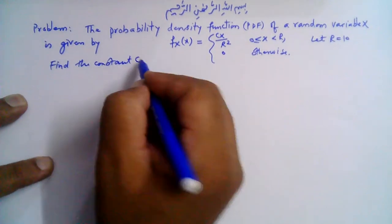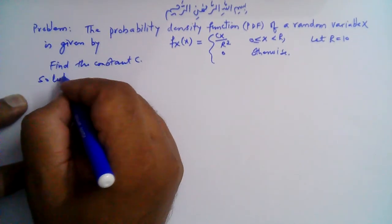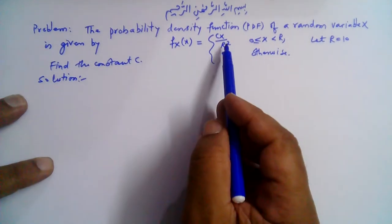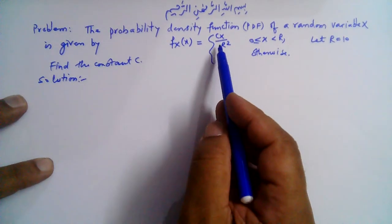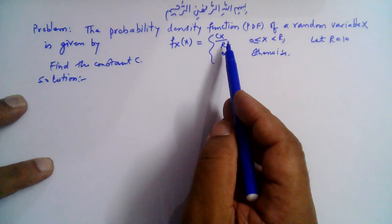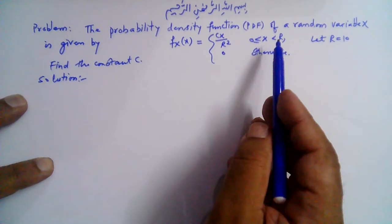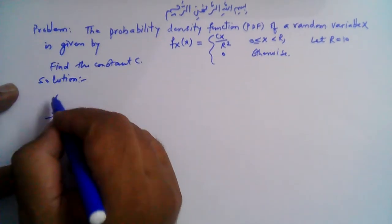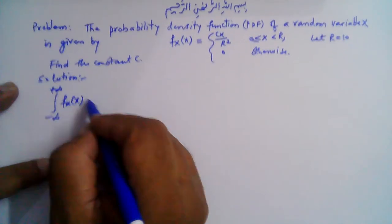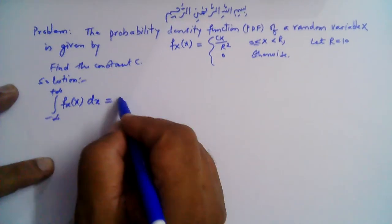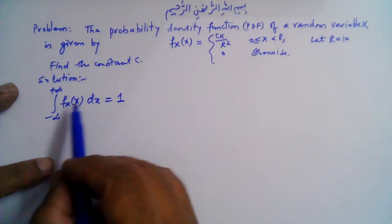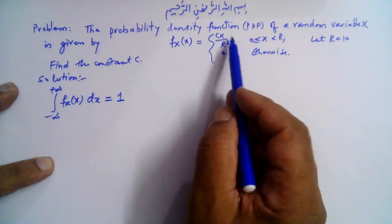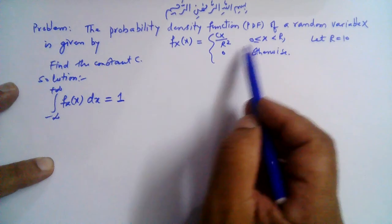Let's begin the solution. For this to be a valid PDF, the total probability over the entire range must equal 1. In other words, the integral from minus infinity to plus infinity of f(x) dx must equal 1. The function has a non-zero value only over the interval [0, r); elsewhere it is 0.